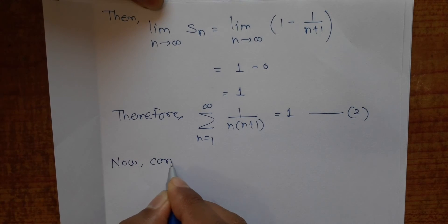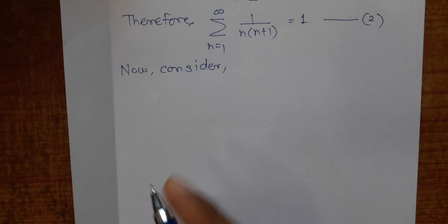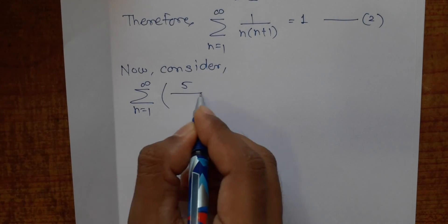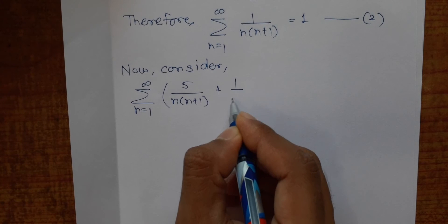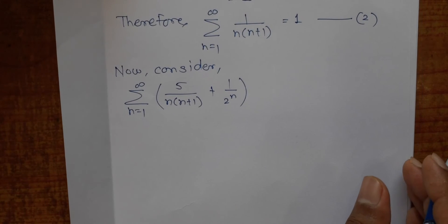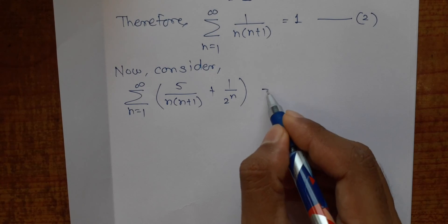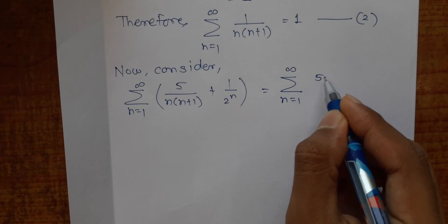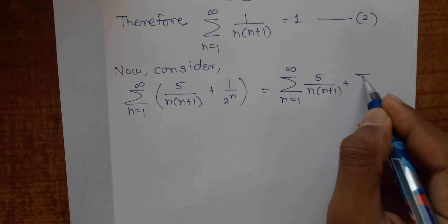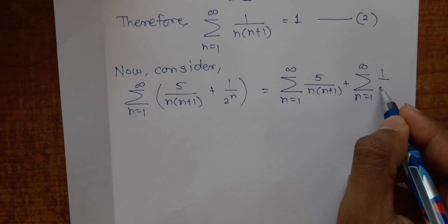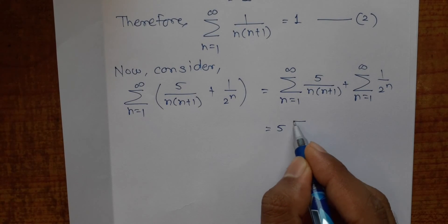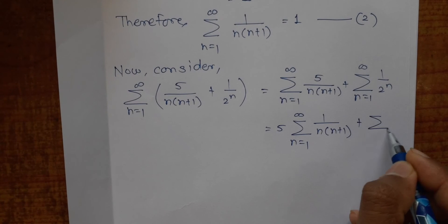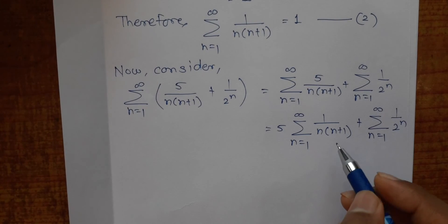Now we consider the given series: ∑(n=1 to ∞) [5/(n(n+1)) + 1/2^n]. By the theorem on algebra of convergent series, addition allows us to separate: = ∑(n=1 to ∞) 5/(n(n+1)) + ∑(n=1 to ∞) 1/2^n. Since 5 is a constant, this becomes 5·∑(n=1 to ∞) 1/(n(n+1)) + ∑(n=1 to ∞) 1/2^n.